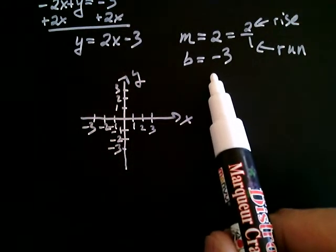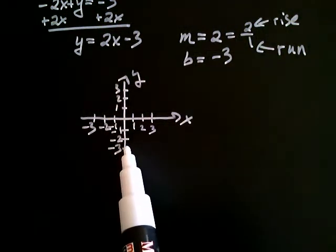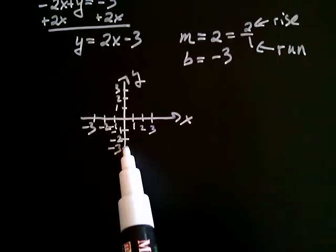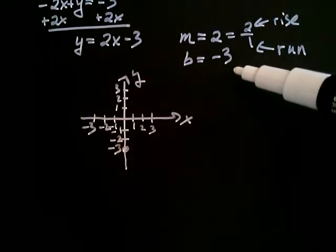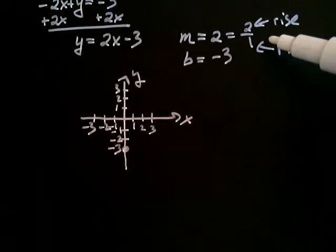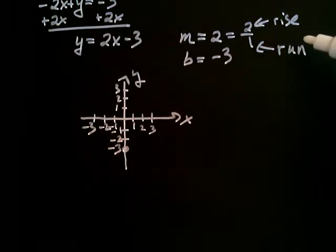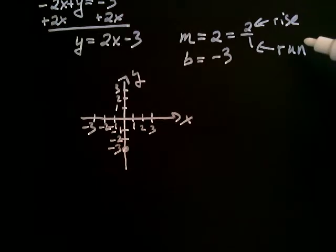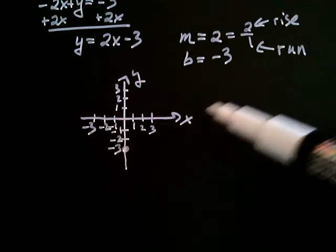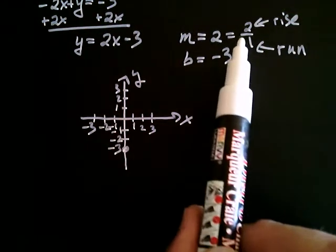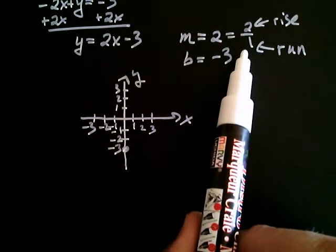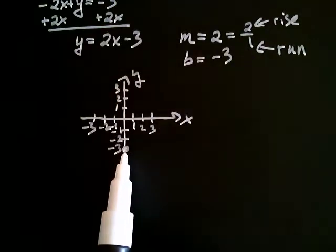The y-intercept is the point right here — it's where the line crosses the y-axis. Now I like to think of the slope as a set of instructions telling you what to do from the y-intercept. From the y-intercept, the slope says: rise 2 and run 1. It's important that you start from a point already on the line — in this case, the y-intercept.